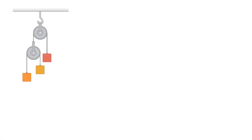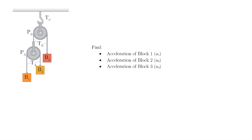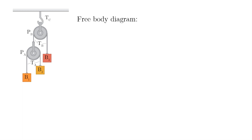What we need to find is the different accelerations of the different masses on a double Atwood machine. So the first thing we will be doing is to illustrate a free body diagram. For the free body diagram, or FBD, there are three blocks shown in the figure, and in each block there are two pulleys respectively that pull the blocks using strings.